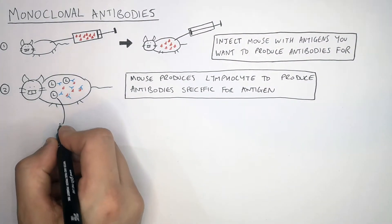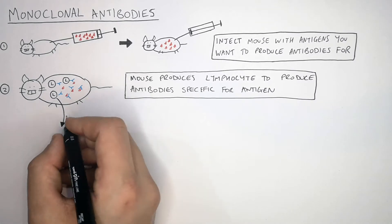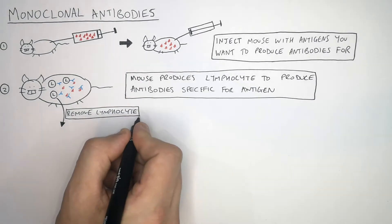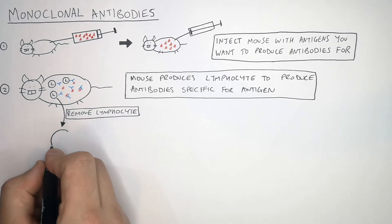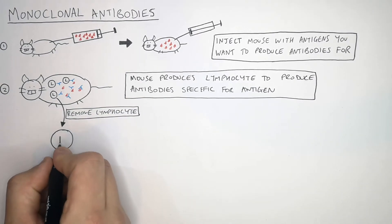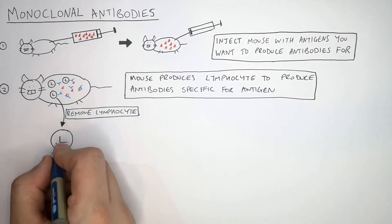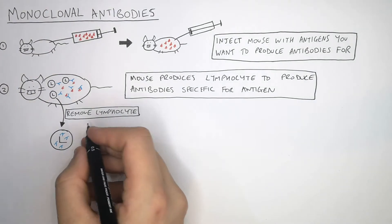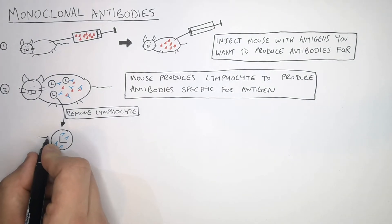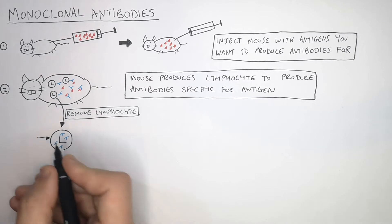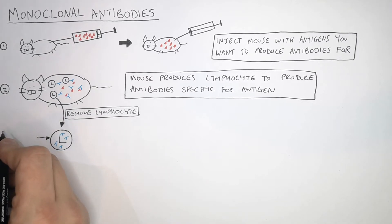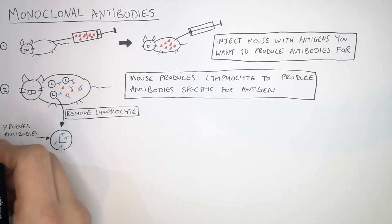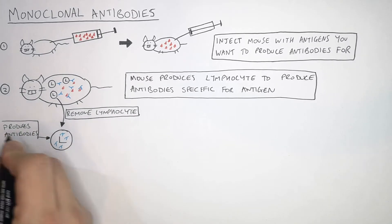You will then remove the B lymphocyte from the mouse. As you can see here, the B lymphocyte has been removed from the mouse. This B lymphocyte produces the antibodies that you want to make the monoclonal antibodies from.